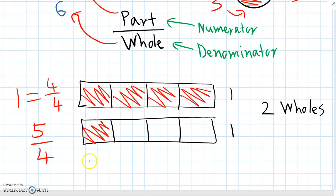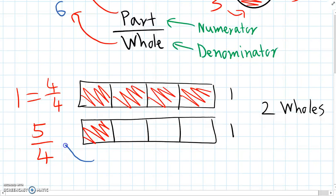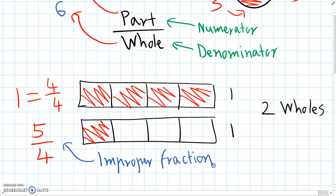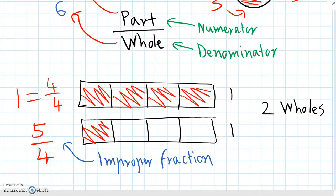This type of fraction that's greater than one whole is called an improper fraction. You can see that if the numerator is bigger than the denominator, we know that it's an improper fraction — the total number is bigger than one.